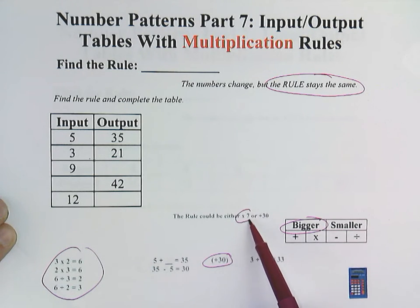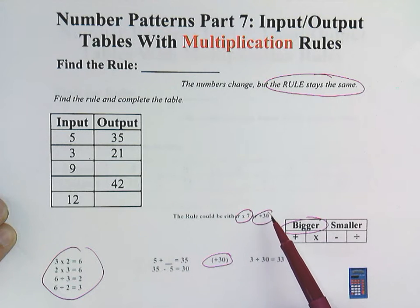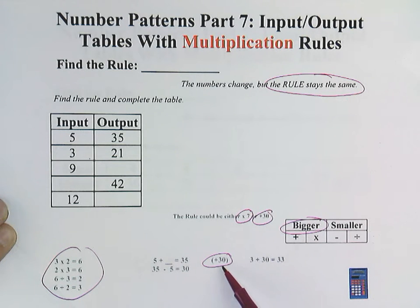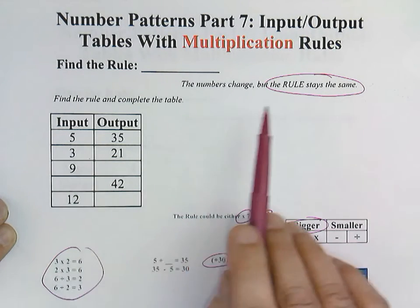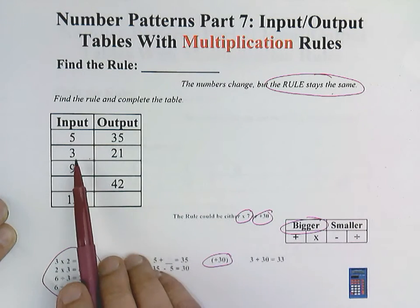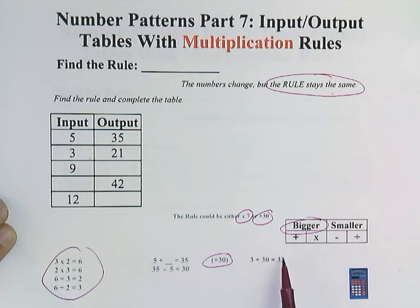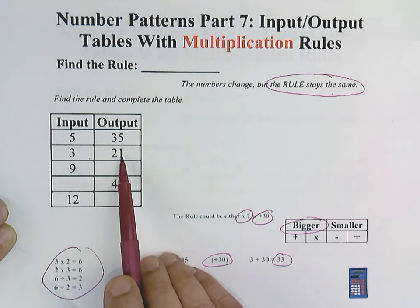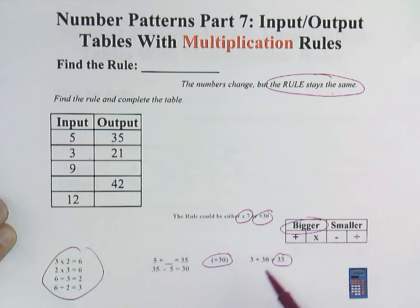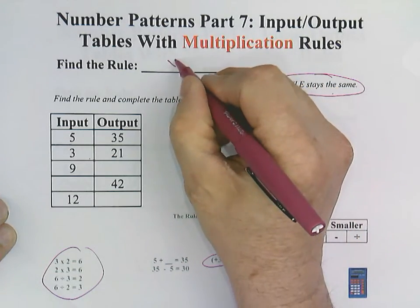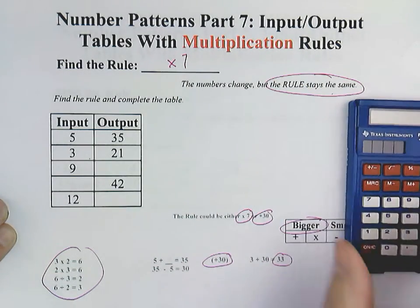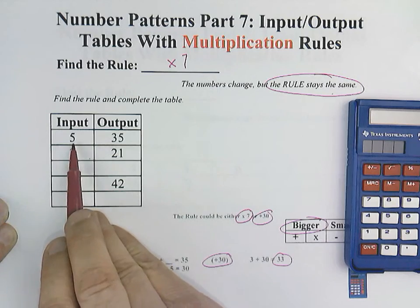Well, which is it? Is it going to be a times 7 or a plus 30? We can eliminate the plus 30. Here's why. Remember, we said the rule has to stay the same. 3 plus 30 would equal 33 and not 21. So we know that this is going to be a times 7 rule.